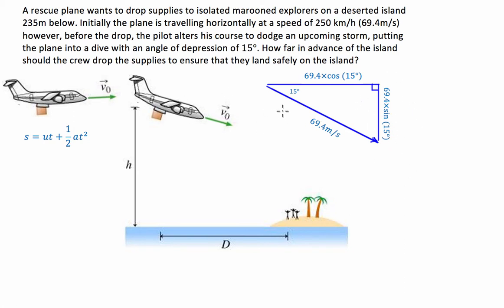So the first thing we're going to do is figure out how long it's going to take this package to fall 235 metres to the ground. To start with, we're going to use this formula here where we have distance equals the initial velocity times time plus half times acceleration due to gravity times time squared.